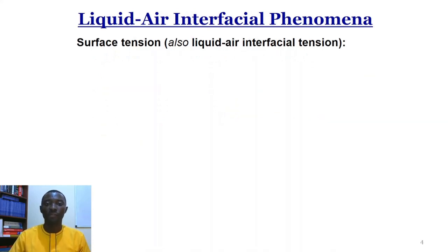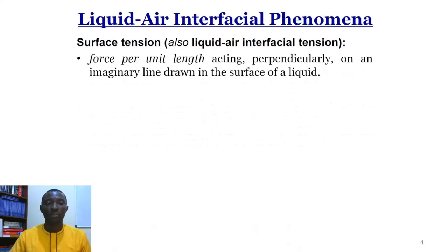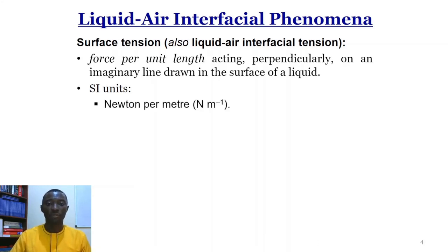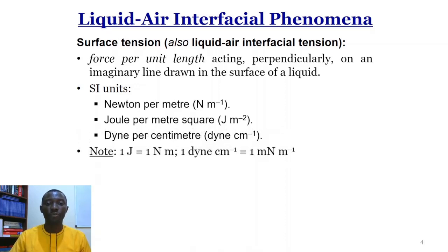Surface tension is also known as liquid-air interfacial tension. By definition, surface tension is the force per unit length acting perpendicularly on an imaginary line drawn on the surface of a liquid. The SI units for surface tension are Newton per meter, joule per meter squared, and dyne per centimeter. Note that one joule per meter squared equals one Newton per meter, and one dyne per centimeter equals one millinewton per meter.